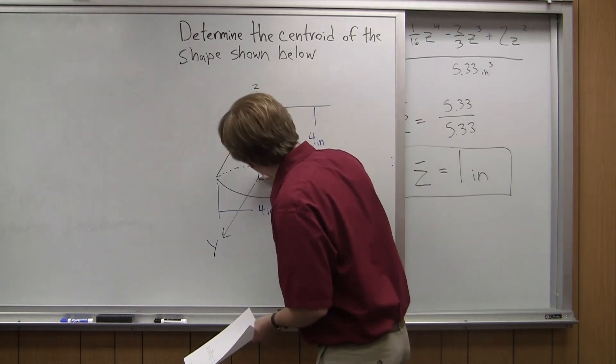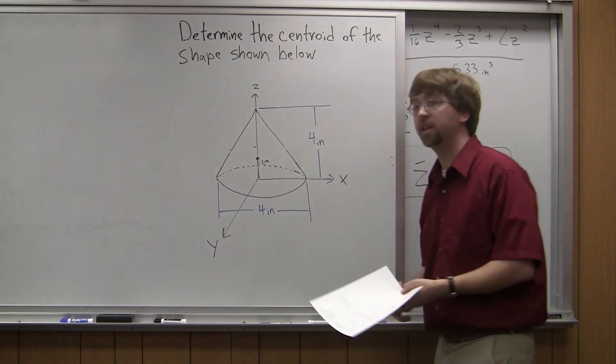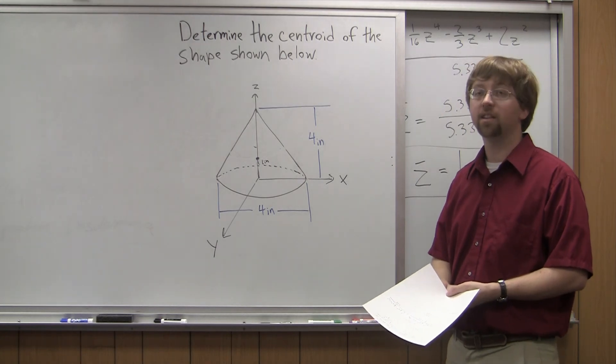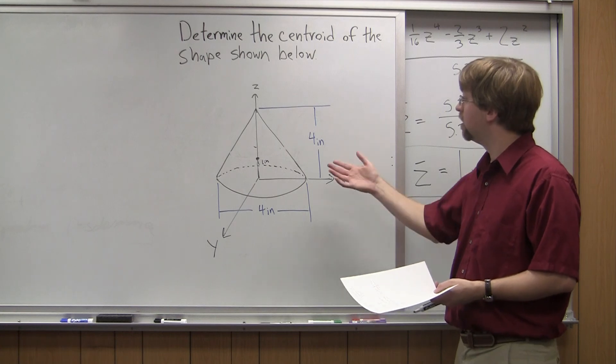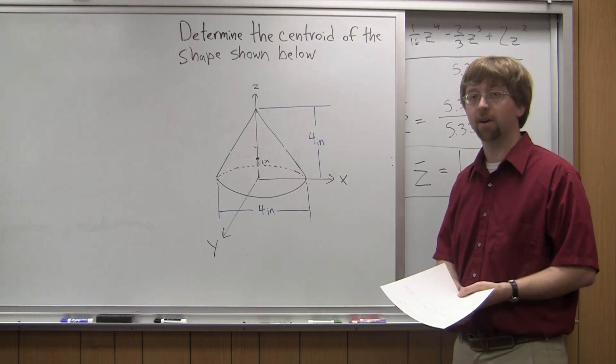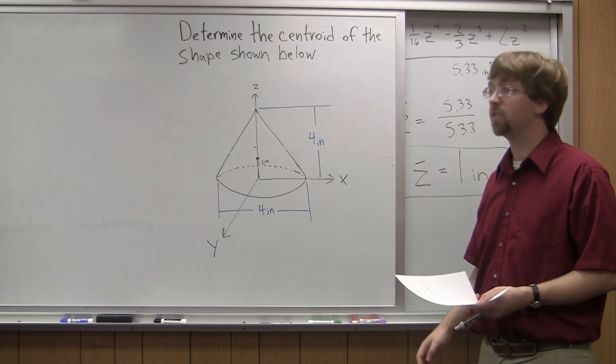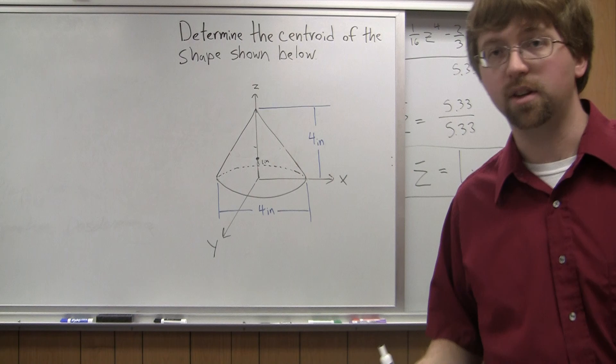So if I go up the z axis by one inch, that is going to be the centroid coordinate for my cone. We can check this if we look at the table of common centroids, and we can see that this matches up with what we would expect from that table. So with that, I've done the calculations to find my centroid, I've solved my problem. Thank you for watching, and I hope to see you again.